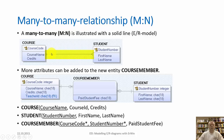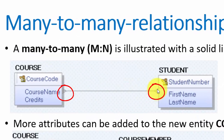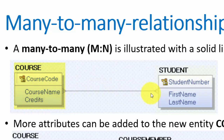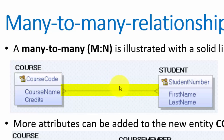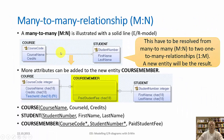In an ER model, we can also model a many-to-many relationship. Here we have a solid line with a many cardinality on both sides. We can read it like this: one course can have many students, and one student can attend many courses. It's not possible to realize this kind of many-to-many relationship in a physical model, so it has to be resolved, and we will end up with a new entity between these two.